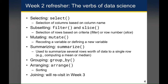Remember that if you first use group_by and then summarize, you actually get back one row per group. So if the group_by variable has three categories, you'll get back three rows in the data frame when you do group_by followed by summarize.